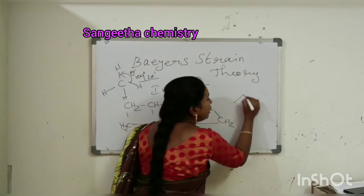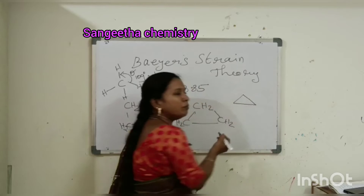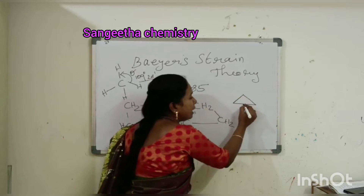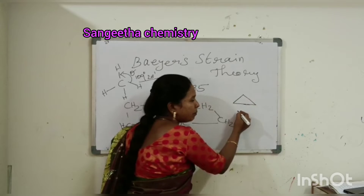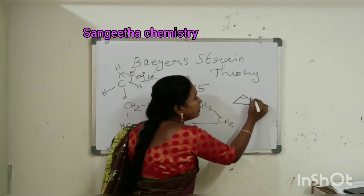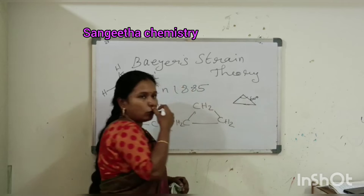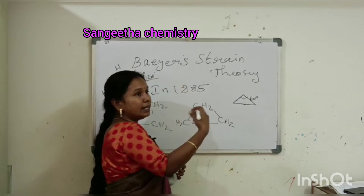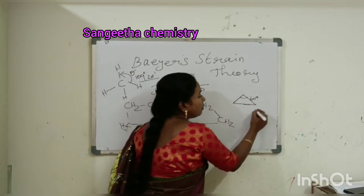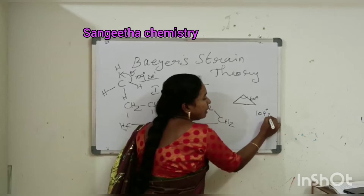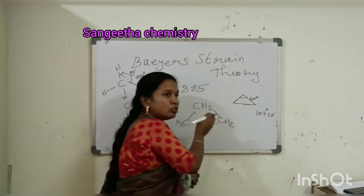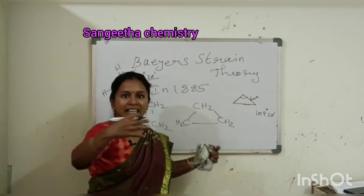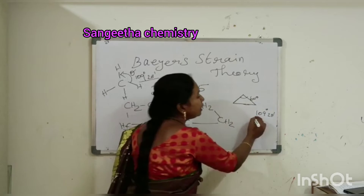This is cyclopropane — it is a triangle shape. This bond angle is 60 degrees. Every assumption starts here: the bond angle in cyclopropane is 60 degrees, but the normal tetrahedral value is 109 degrees 28 minutes. The actual ring angle is 60 degrees.